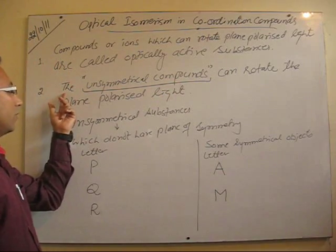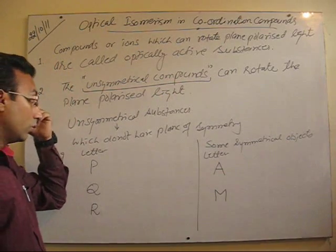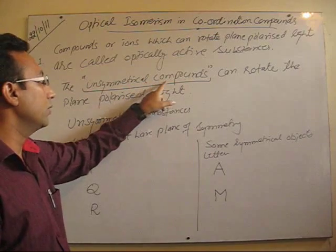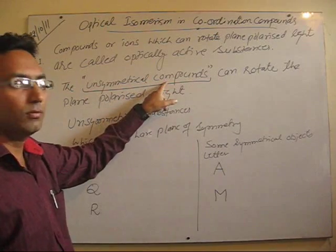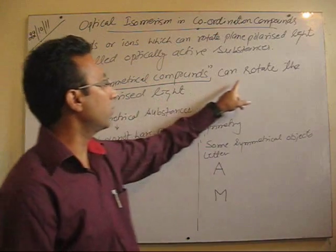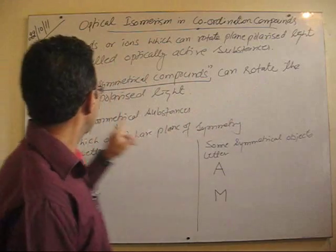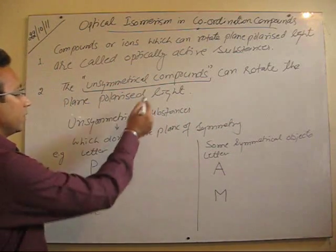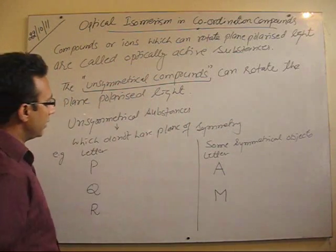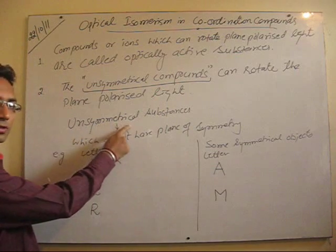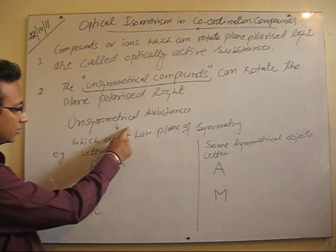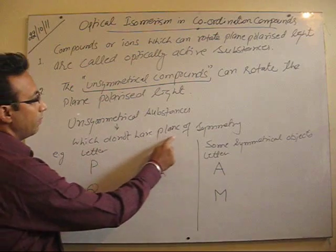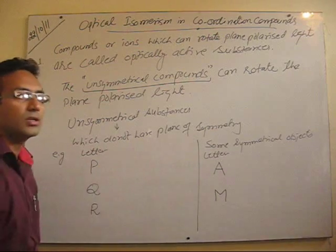Now, what has been found is that compounds which are unsymmetrical can rotate the plane of polarized light and they will be optically active. Unsymmetrical substances are those which do not have a plane of symmetry in them — that means they do not have one plane at the center which can divide them into equal halves.